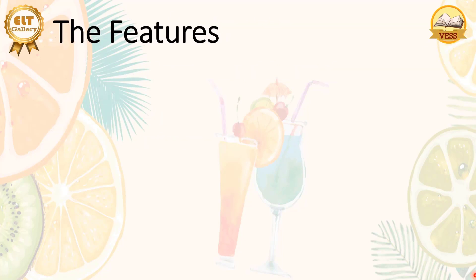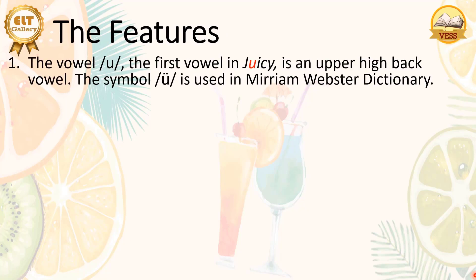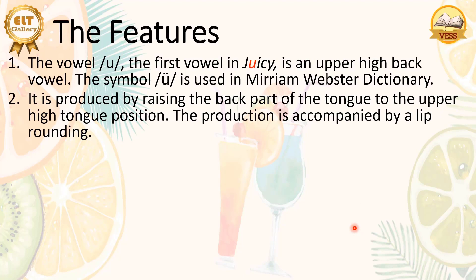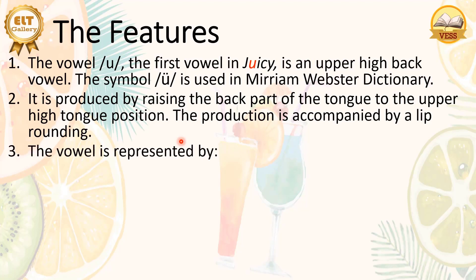Let's start with the features. The vowel /u/, the first vowel in 'juicy', is an upper high back vowel. The symbol in the Merriam-Webster dictionary is shown here — this is the symbol when we check in a website or on a cell phone. This vowel is produced by raising the back part of the tongue to the upper high tongue position, the highest position of the tongue in the back. The production is also accompanied by lip rounding — when we produce this vowel, our lips are rounded.